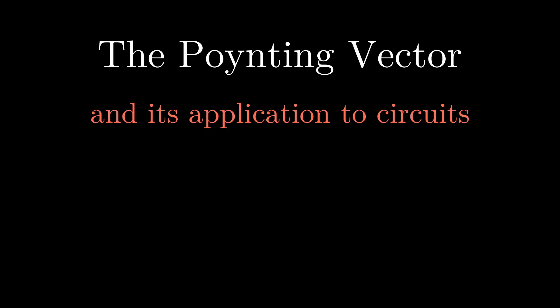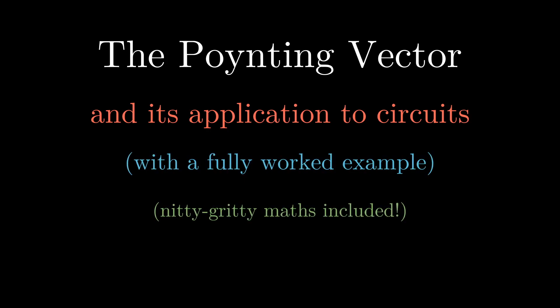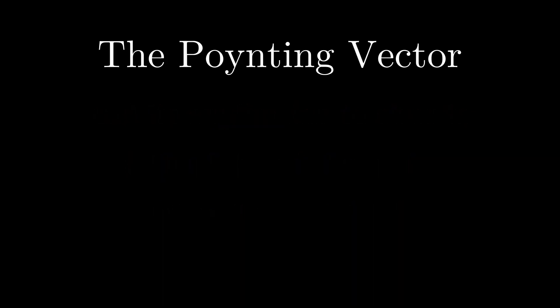I'm not going to pull a pop science and wave my hands around and not actually tell you anything precise. We'll do some real maths and get some real results. We're going to talk about something called the Poynting vector, which describes the flow of energy in electric and magnetic fields.